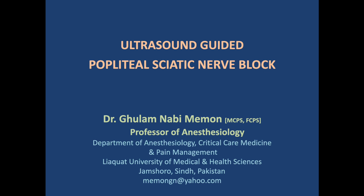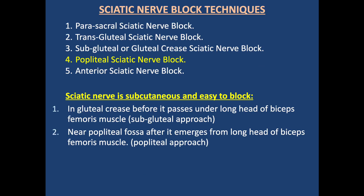Hello friends, today we will discuss Ultrasound Guided Popliteal Sciatic Nerve Block. There are different techniques to block the sciatic nerve according to anatomical position. Number one is the Parasacral Sciatic Nerve Block approach. The second is the Transgluteal Sciatic Nerve Block, in which we go through the gluteus maximus muscle. The third technique is Subgluteal or Gluteal Crease Sciatic Nerve Block. The fourth is Popliteal Sciatic Nerve Block. The fifth is Anterior Sciatic Nerve Block.